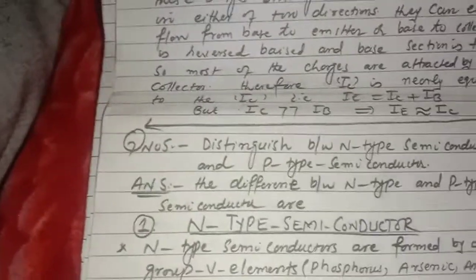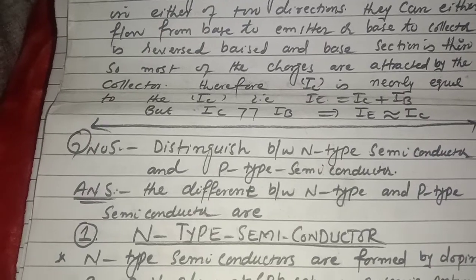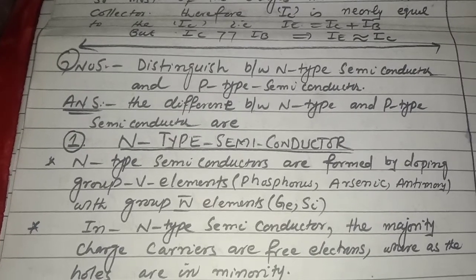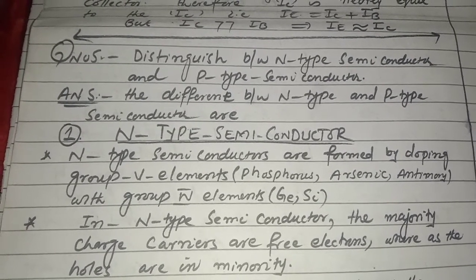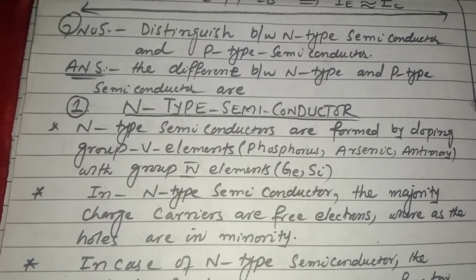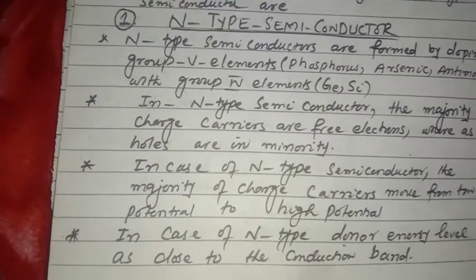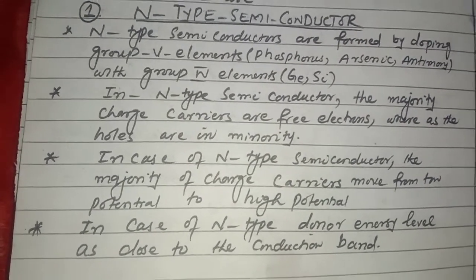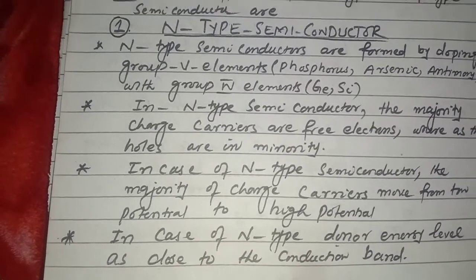Question number 5: distinguish between n-type semiconductor and p-type semiconductor. N-type semiconductors are formed by doping group five elements — phosphorus, arsenic, antimony — with the group four element germanium or silicon. In n-type semiconductor, the majority charge carriers are free electrons whereas holes are in minority. The majority charge carriers move from low potential to high potential. In n-type, the donor energy level is close to the conduction band.